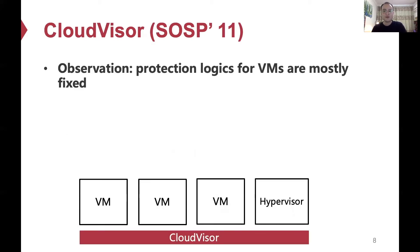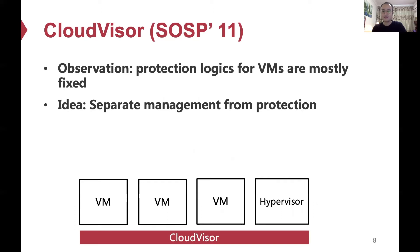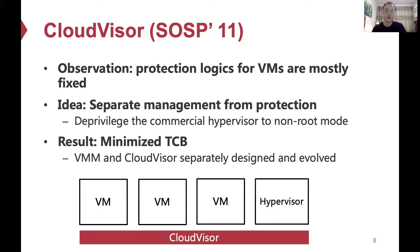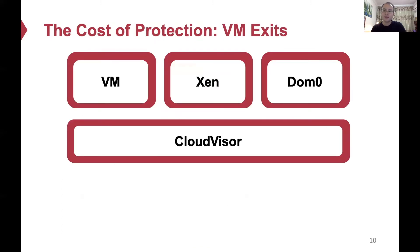Our previous work, CloudVisor, leverages nested virtualization to shield virtual machines. The idea is CloudVisor acts as another layer of hypervisor to deprivilege the commercial hypervisor to non-root mode. The result is that a minimized TCB can tolerate any security vulnerabilities in commercial hypervisors. Moreover, the hypervisor and CloudVisor can be separately designed and evolved.